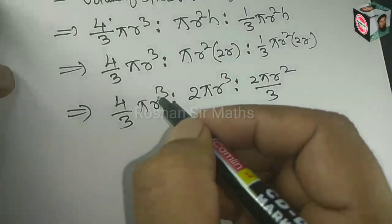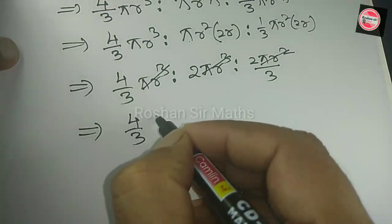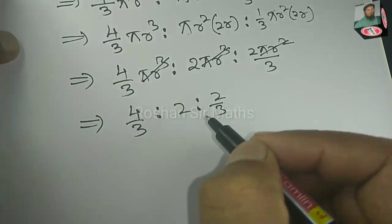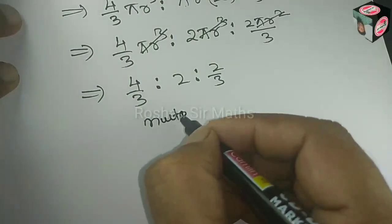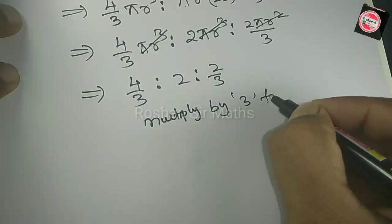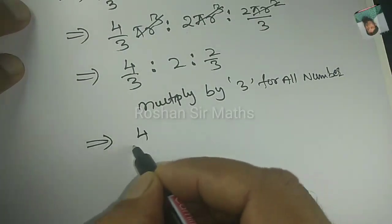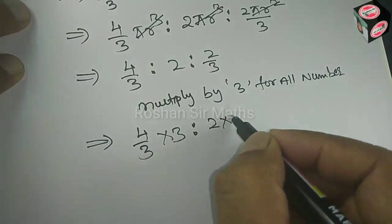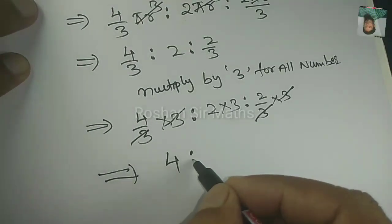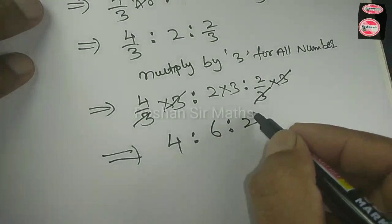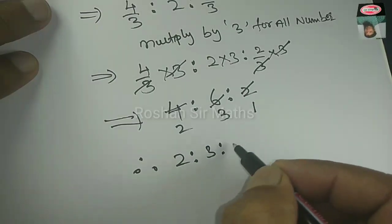Since they are in ratio, we can cancel πr³ throughout. We have 4/3 : 2 : 2/3. The LCM is 3, so multiply all terms by 3: (4/3)×3 : 2×3 : (2/3)×3 gives 4 : 6 : 2. Dividing by 2, the final answer is 2 : 3 : 1. This is the answer.